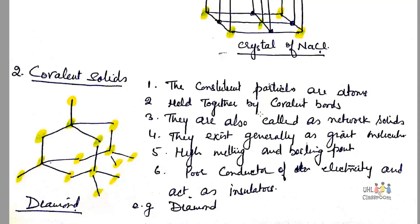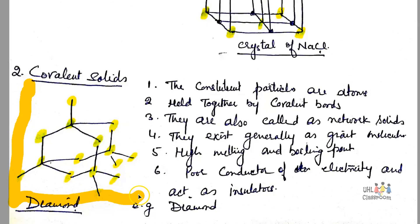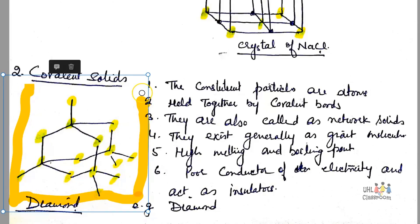Covalent solids have high melting and boiling points. They are poor conductors of electricity and act as insulators. An example is diamond, and its structure is highlighted.